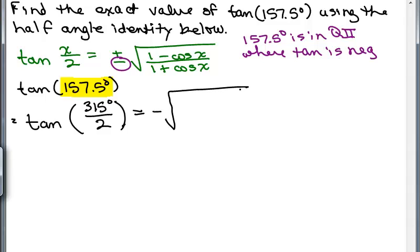So I choose the negative sign and then I'm plugging in for X, this 315 degrees. So I have 1 minus the cosine of 315 degrees over 1 plus the cosine of 315 degrees.